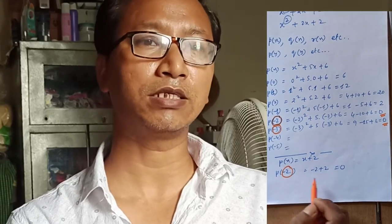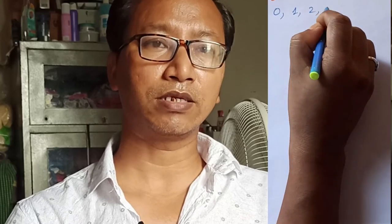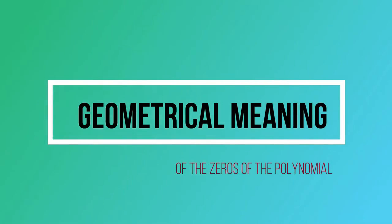In another example, p(x) = x plus 2: when we put x equal to minus two then p(x) becomes zero, so minus two is the zero of the polynomial. Again, when p(x) = x, for x equal to zero, p(x) equals zero, so zero is the zero of the polynomial. Thus the word 'zero' does not always stand for zero — it may be any number, because by definition those values of x for which p(x) becomes zero are called the zeros of the polynomial.